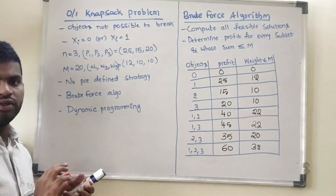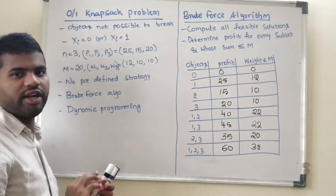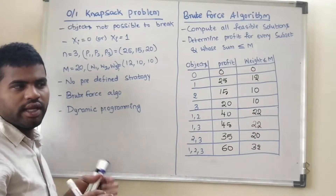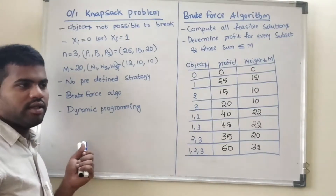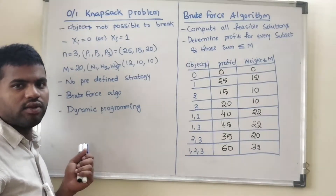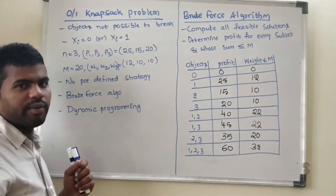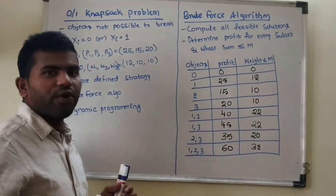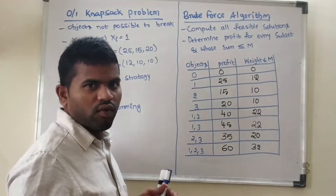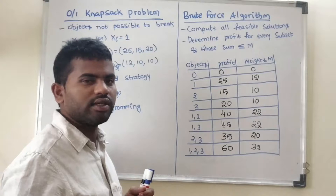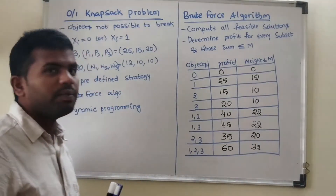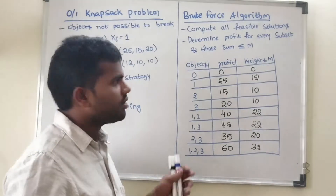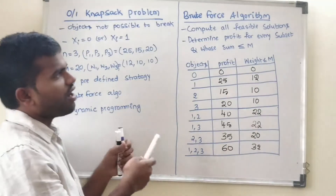In the 0/1 knapsack problem, there is no predefined algorithm or predefined strategy. If you see fractional knapsack, there is a greedy algorithm for that. Here, there is no predefined strategy like that. We will discuss two methods: one is the brute force method and the other is dynamic programming. In brute force, we compute all feasible solutions — whatever possible solutions — and then determine the profit for every subset with weight sum less than or equal to the maximum weight.